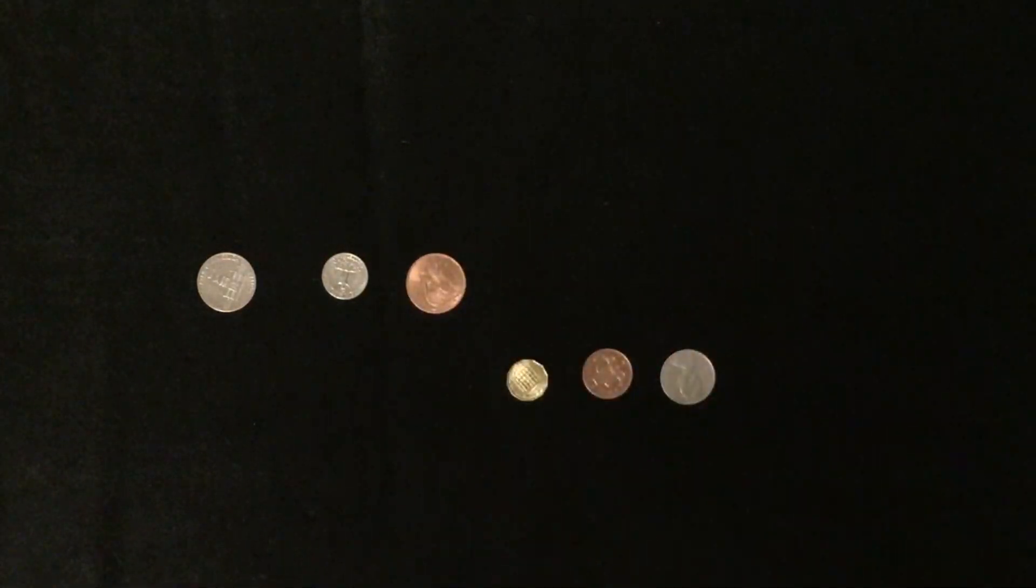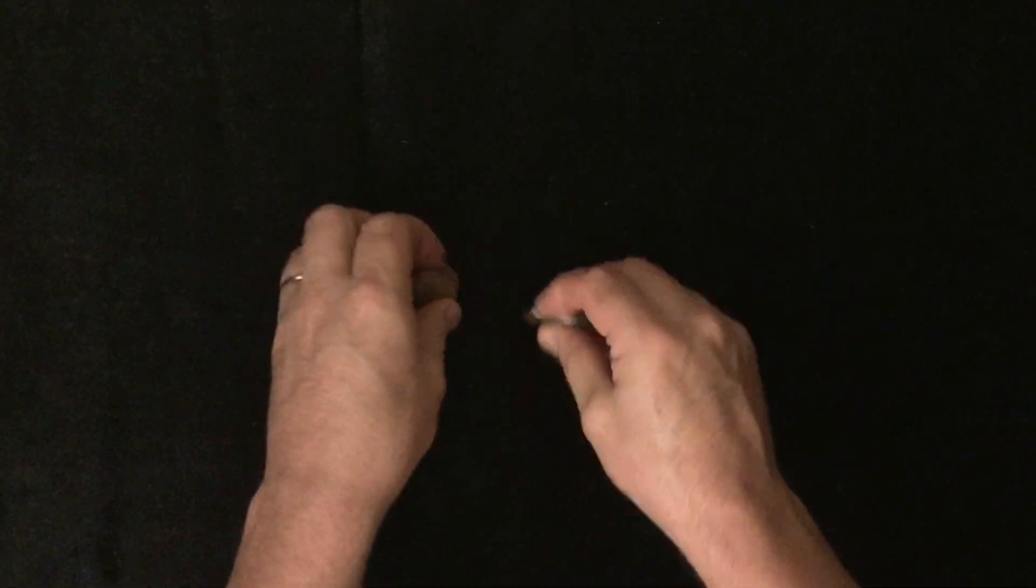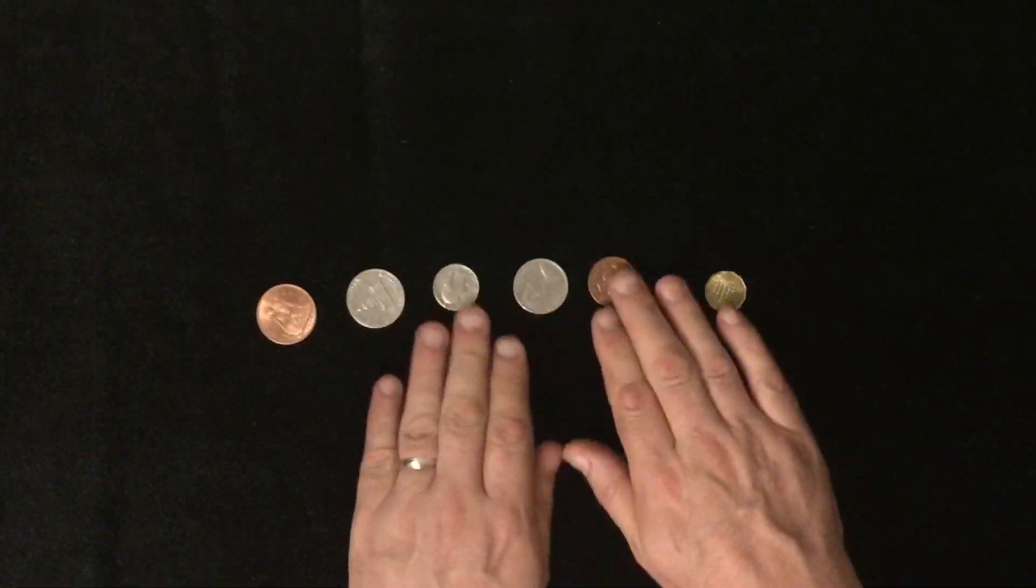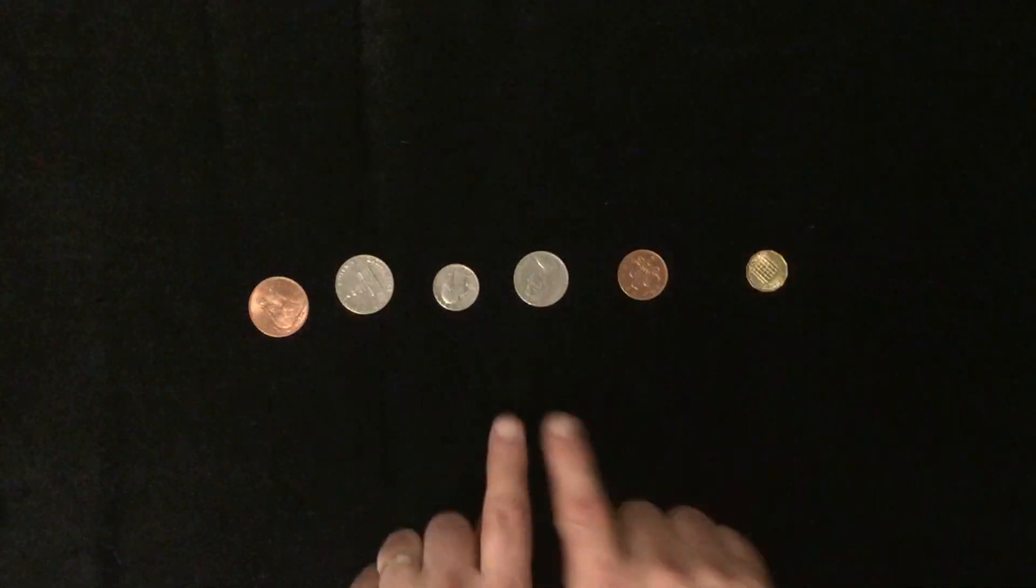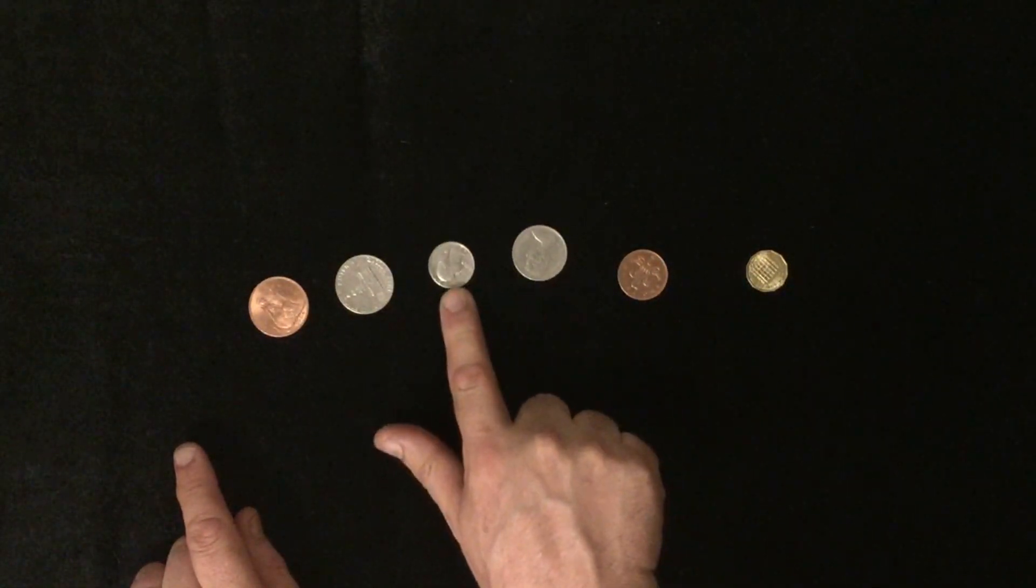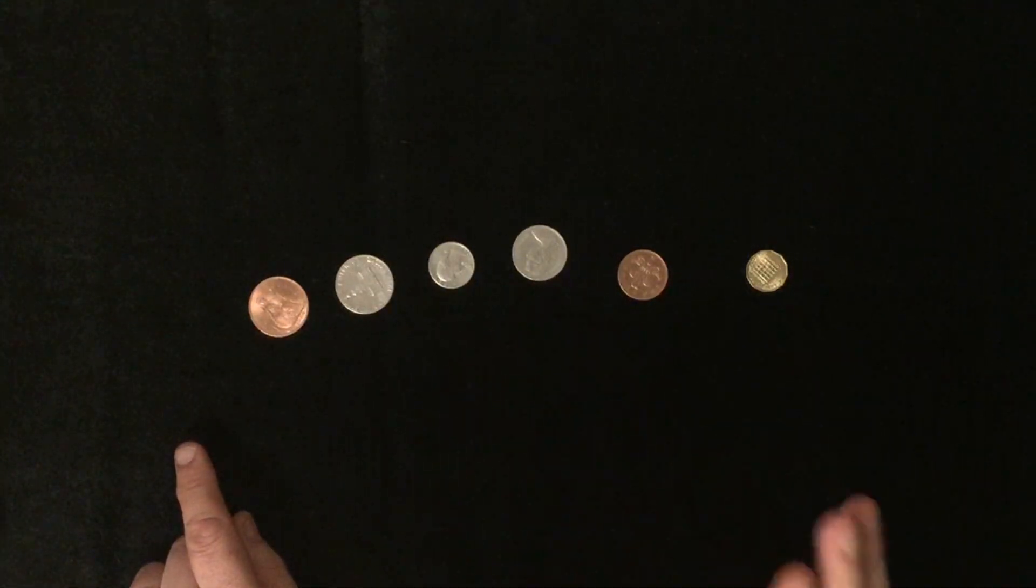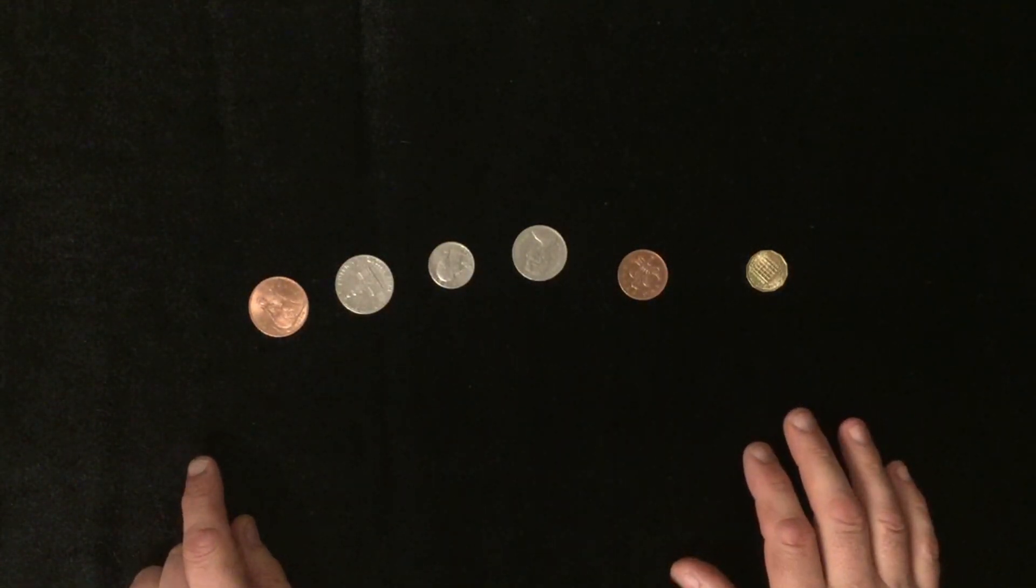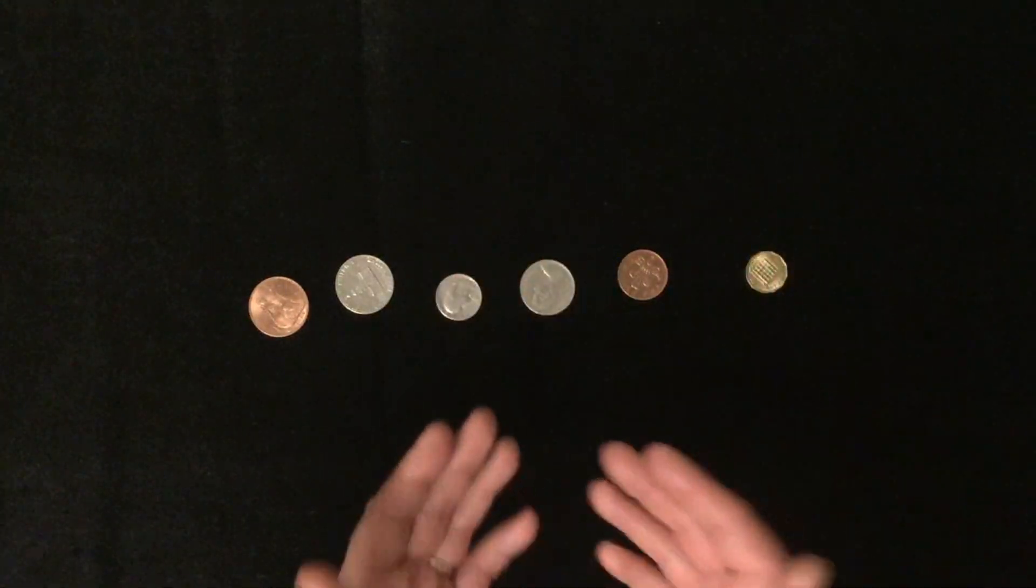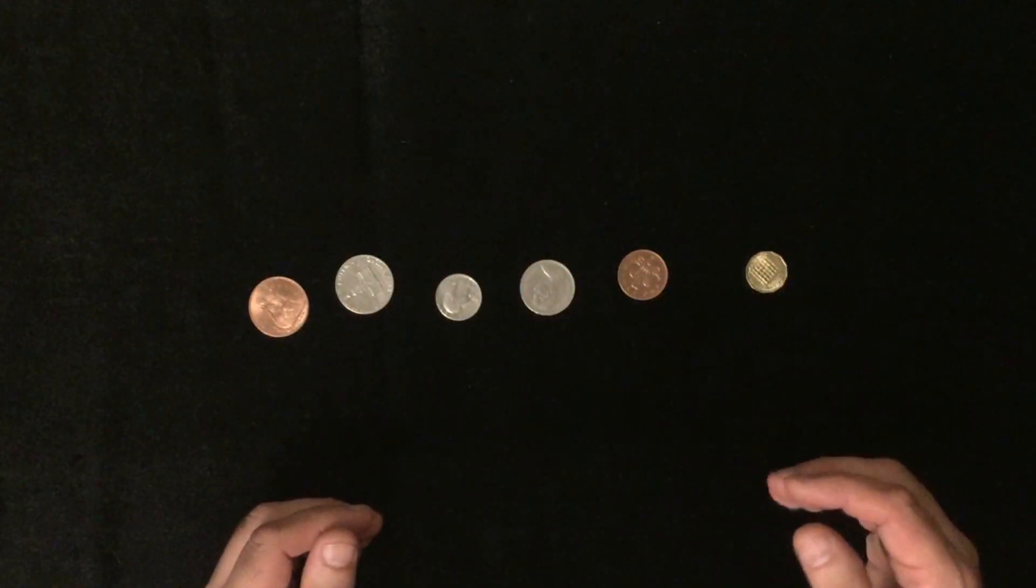Now if you didn't quite get that let me just demonstrate that once again. Let's mix the coins up very quickly. I'm going to count the number of heads currently showing. I can see that this is a head and this one's a head. So the number I'm going to keep in my head at this point is two.